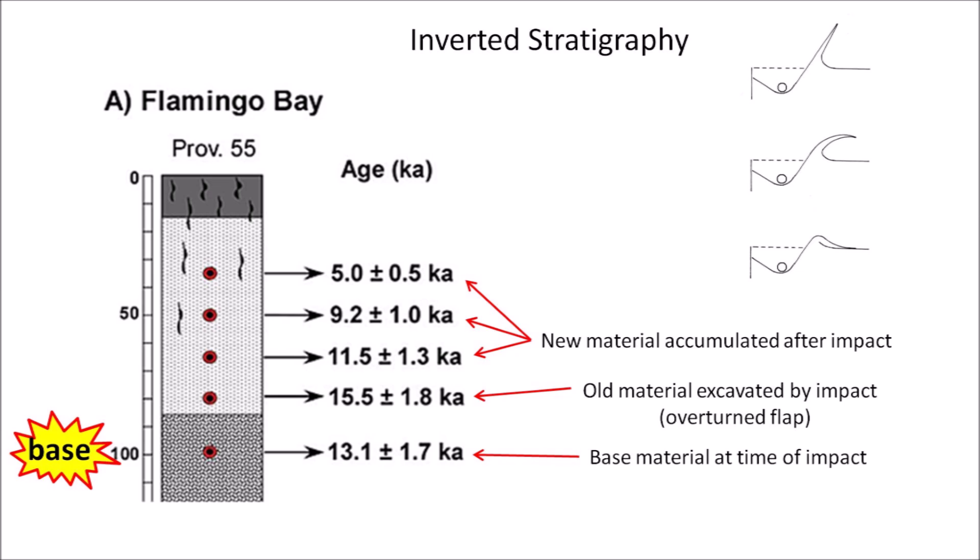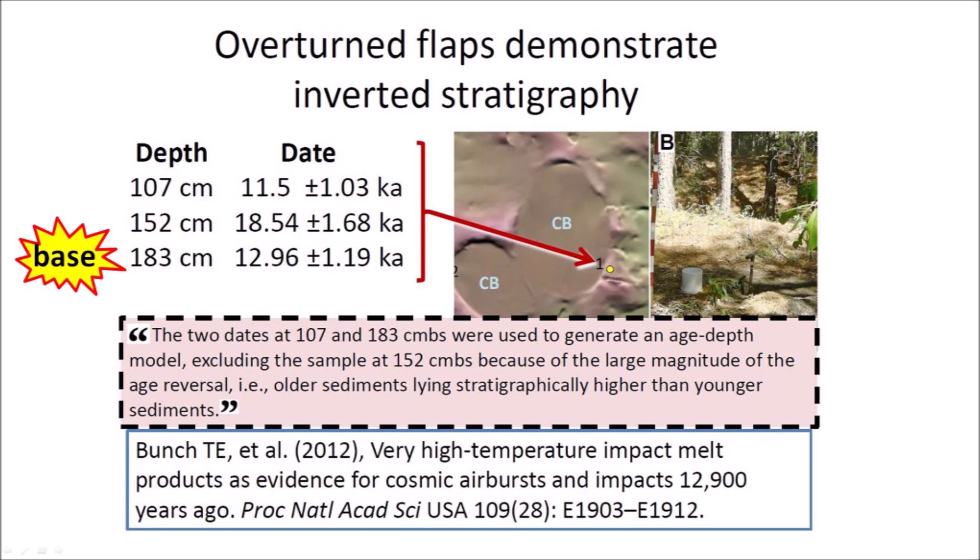The old material is covered with new material that accumulated after the impact, with dates from 11.5 to 5.0 thousand years ago. A similar case of inverted stratigraphy was reported by Bunch et al. in 2012 for the rim of a Carolina Bay near the town of Blackville, South Carolina. The base layer with a date of 12.96 thousand years ago is overlaid with material dated at 18.54 thousand years ago — this older material was excavated by the impact to form the overturned flap. It is overlaid with a younger layer dated at 11.5 thousand years ago, consisting of material that accumulated after the impact.